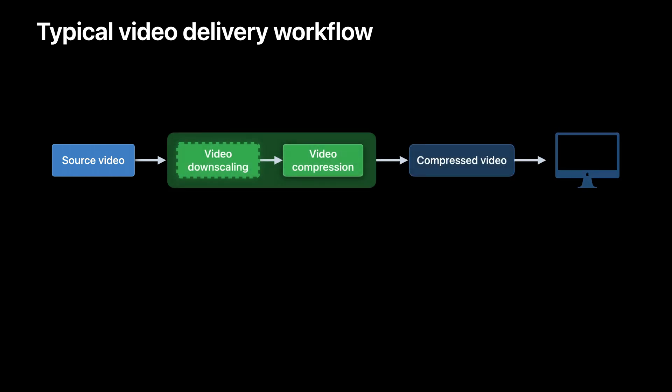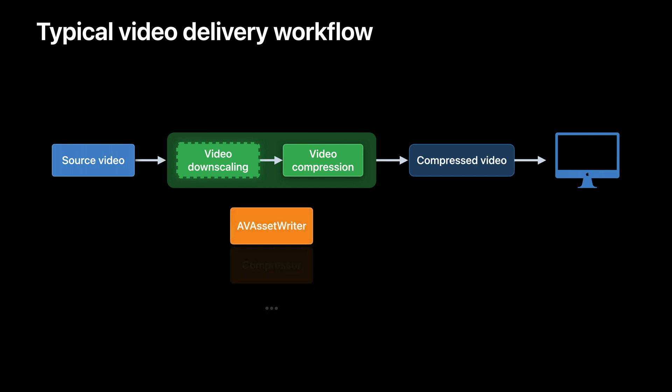Let's start by looking at a typical video delivery workflow. In such a workflow, the high quality source video undergoes video compression and optionally video downscaling to generate videos with lower bitrates. These low bitrate videos can then be easily delivered over bandwidth constrained networks. A few possible ways to use such workflows include AV Foundation APIs such as AV Asset Writer, apps such as Compressor, or one of your own video compression workflows.